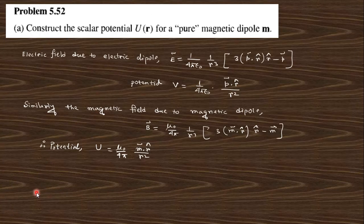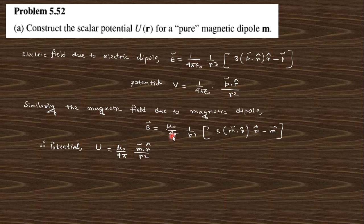Next, construct the scalar potential for a pure magnetic dipole. The electric field of a dipole has a known potential form; similarly, the magnetic field for a dipole is analogous, and the corresponding scalar magnetic potential follows that same form.